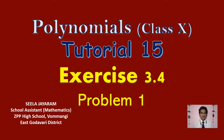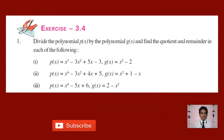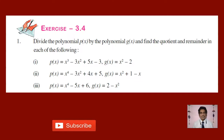I will discuss the first problem with related solutions. This is your first problem: divide the polynomial P of x by the polynomial G of x and find the quotient and remainder in each of the following. Basically you will be given a dividend and divisor, and you have to calculate the quotient and the remainder. This is like discussing the division algorithm for polynomials once again.